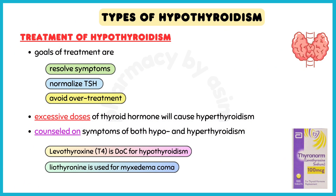The goals of treatment are to resolve symptoms, normalize TSH, and avoid overtreatment. Excessive doses of thyroid hormone will cause hyperthyroidism. Patients should be counseled on symptoms of both hypo and hyperthyroidism. Levothyroxine T4 is the drug of choice for hypothyroidism, while liothyronine is used for myxedema coma.